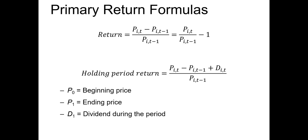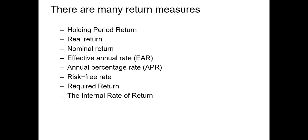The only difference between the basic return formula and the holding period return formula is that the basic one doesn't include the dividend or income in the numerator. We'll start our class with a few examples using these formulas. While we have these two primary formulas, there are many other return formulas that we use. We'll discuss all these formulas in class, but they're all built on the basic return or holding period return formulas.